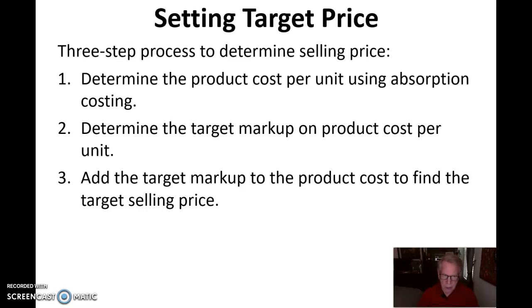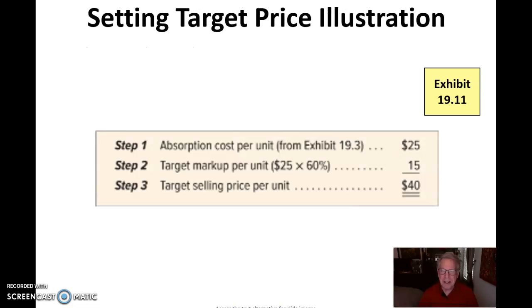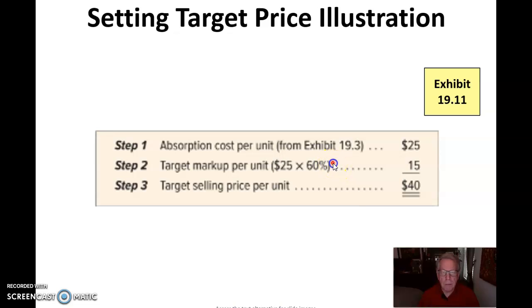The next step is to go out and ask: can I sell it for that? If you can, great. If you can't, more analysis needs to be done. In this case, our full absorption cost was $25. We're going to apply a 60% markup on top of that: 60% of $25 is $15. So I'm going to try to sell that for $40 a unit.